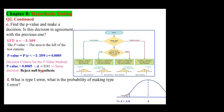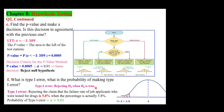The next part asks: what is Type 1 error and its probability? Type 1 error means rejecting H₀ when H₀ is true — in this case, rejecting the claim that the failure rate is 5.8% when the percentage actually is 5.8%. The probability of Type 1 error always equals the choice of alpha, which is 0.01 for this question.